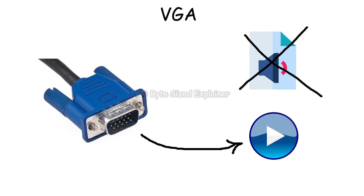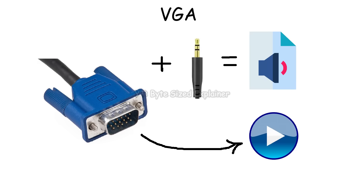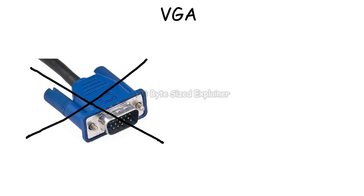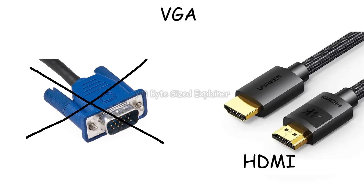VGA only sends video, so you would need to plug a 3.5mm audio cable into the PC so the sound can come out. But in modern setups, VGA is mostly gone, replaced by digital connections like HDMI that deliver sharper images and better colors.